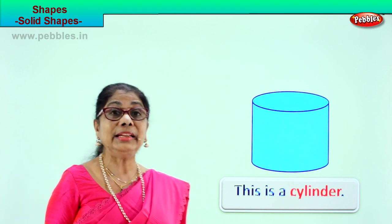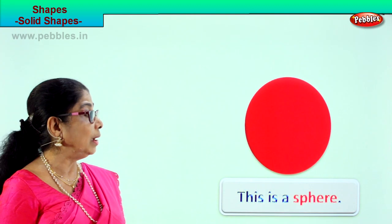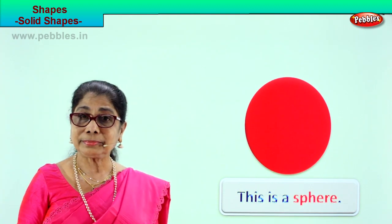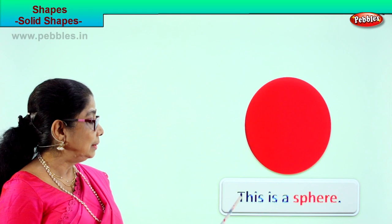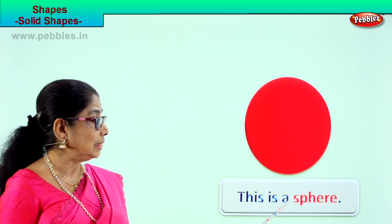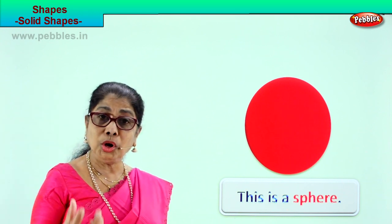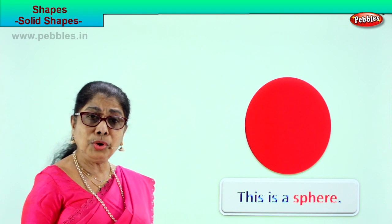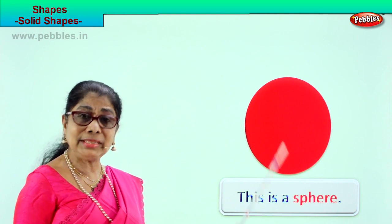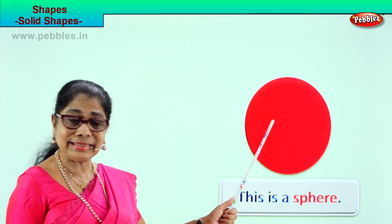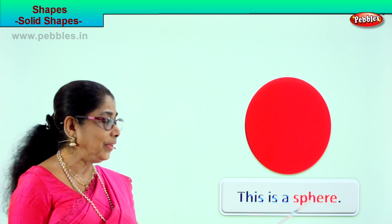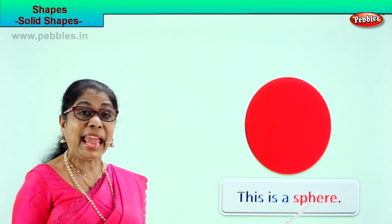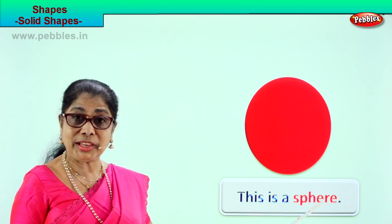Let's look at another solid shape. Here we are — what is this? This is a sphere. You have a ball in your house — a hard rubber ball. You roll it, it bounces. That is a sphere. Spell it: S-P-H-E-R-E.